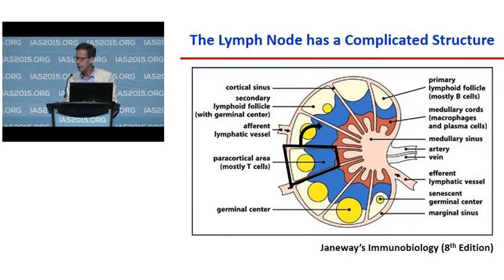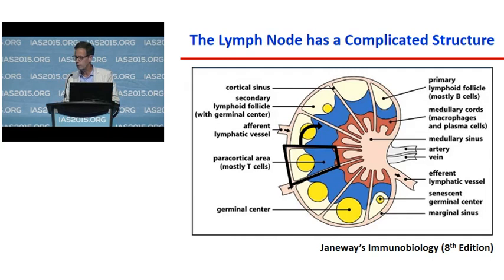The lymph node is actually not just a bag of lymphocytes — it's actually a complex structure. The important parts I'll be discussing are the pericortical areas in blue, which are mostly populated with T cells; the white or cream areas, which are the lymphoid follicles where B cells hang out; and in yellow, the germinal centers where T and B cells come together. I'll simplify this: lymphoid follicle with B cells at the top, pericortical area with T cells at the bottom, and the germinal centers where both interact.